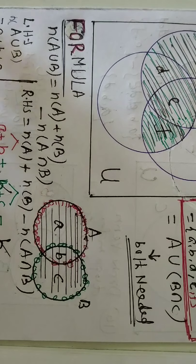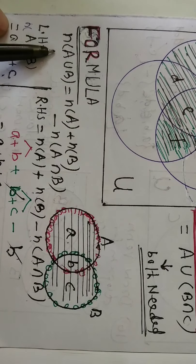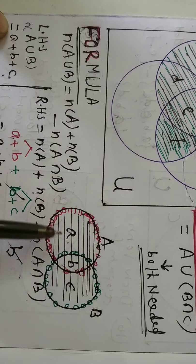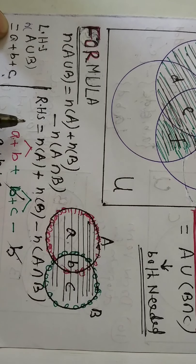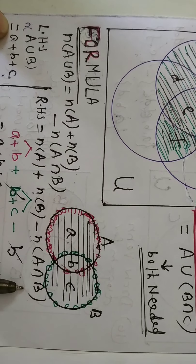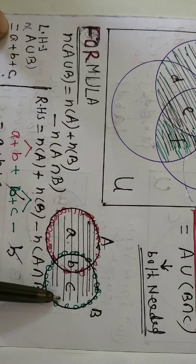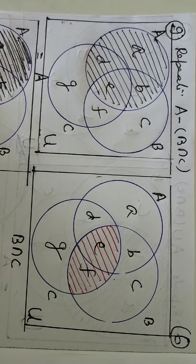Now the formula: N(A union B) equals N(A) plus N(B) minus N(A intersection B). Let A, B, C be the elements in different zones. LHS: N(A union B) is A plus B plus C. RHS: N(A) is A plus B; N(B) is B plus C; N(A intersection B) is simply B. So B cancels, giving A plus B plus C. Hence, proof is complete.